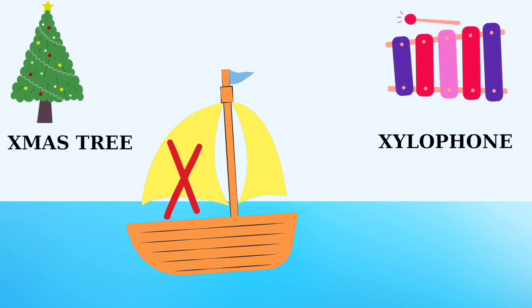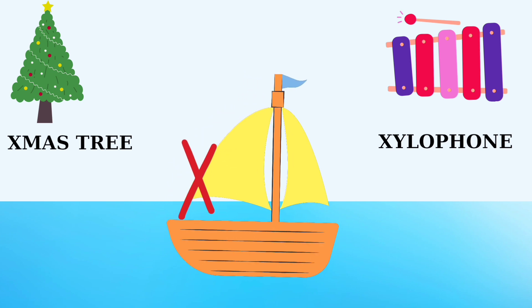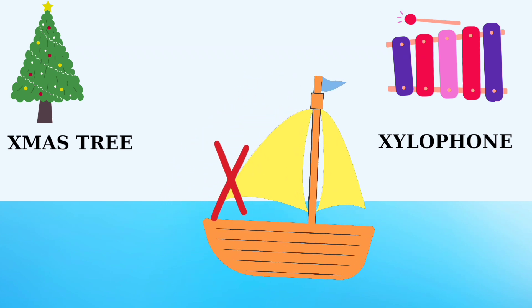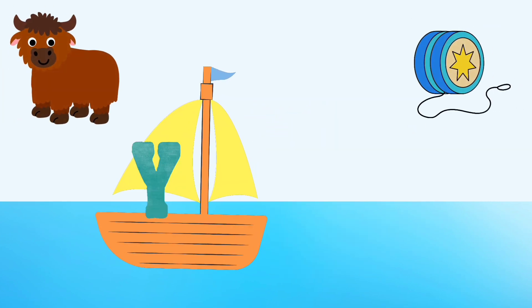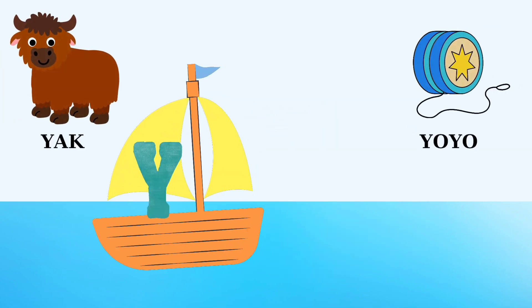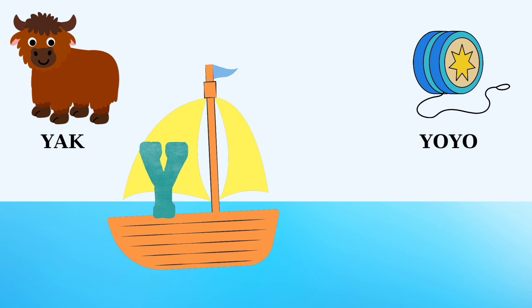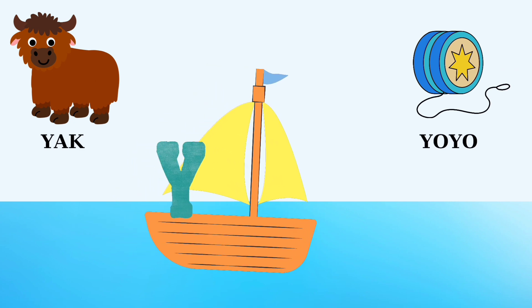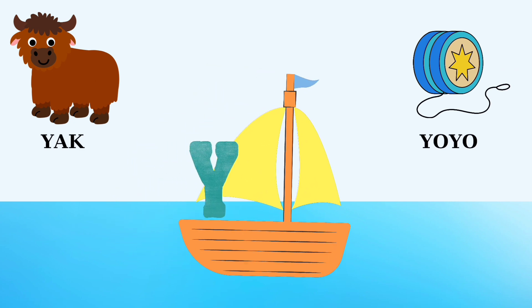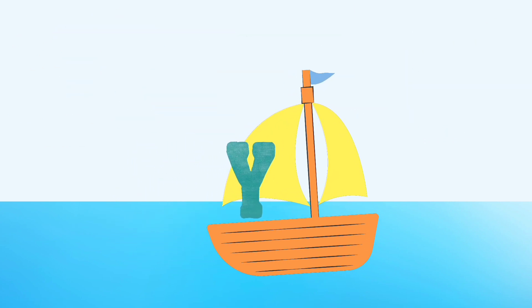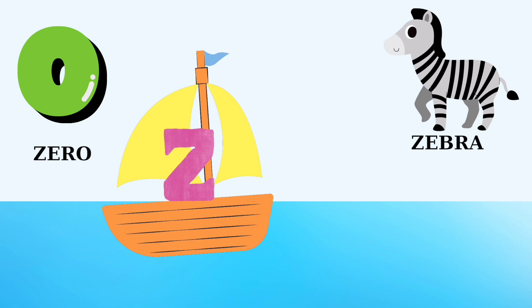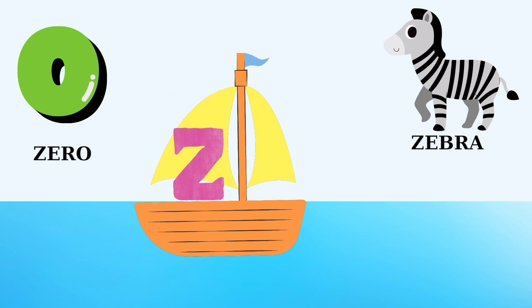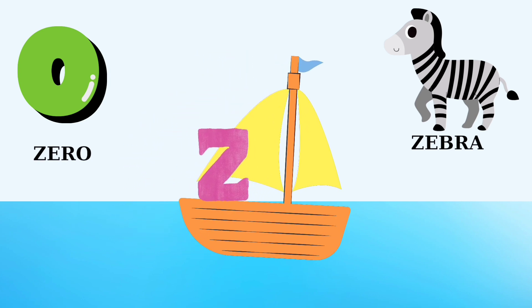X is for Christmas tree, X is for xylophone. Y is for yak, Y is for yo-yo. Z is for zero, Z is for zebra.